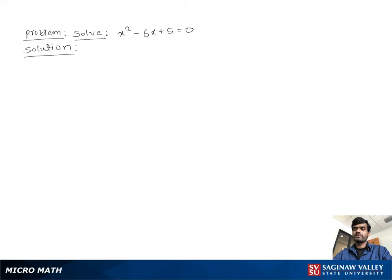Solve x squared minus 6x plus 5 equal to 0. Let's write the problem again: x squared minus 6x plus 5 equal to 0. In the second step, we move plus 5 to the other side as negative 5, so we have x squared minus 6x equal to negative 5.